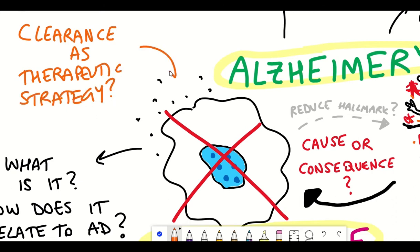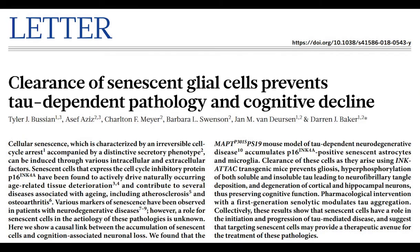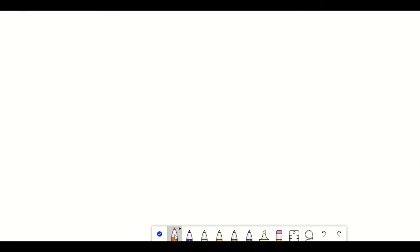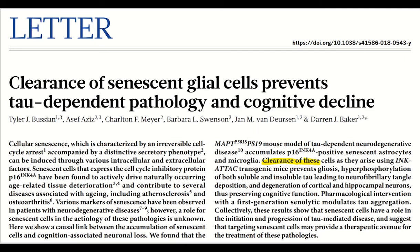In this first research paper that came out in 2018 they showed that clearance of senescent astrocytes and microglia in a mouse model of tauopathy. This is when you have the gene that encodes the tau protein mutated which makes it more prone to aggregation, and it's one of the mouse models used to understand Alzheimer's disease pathology.